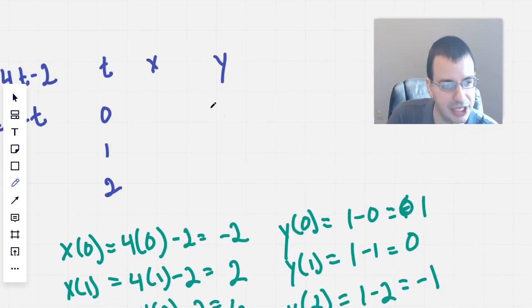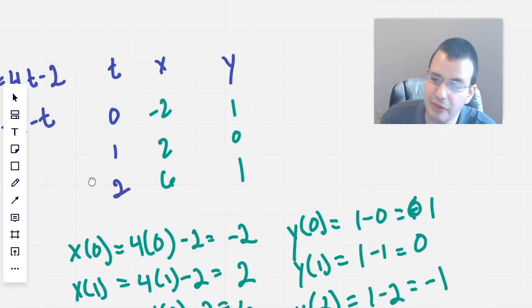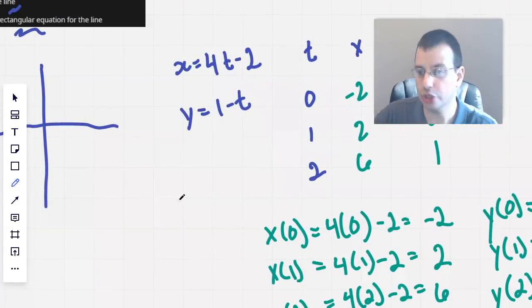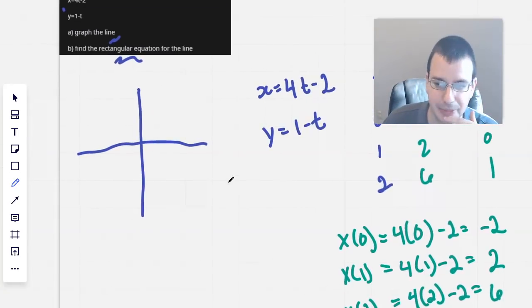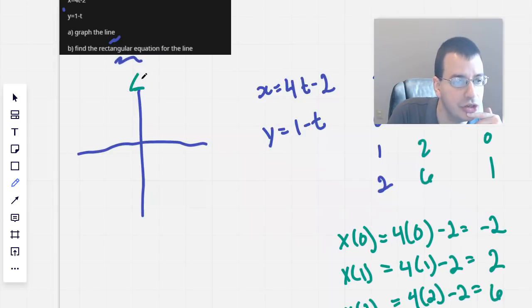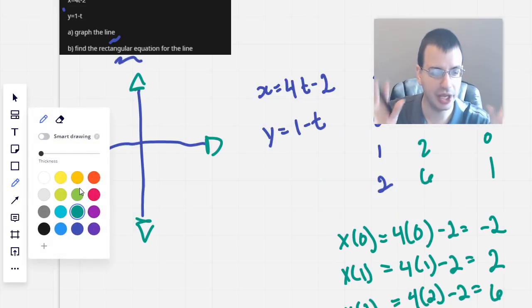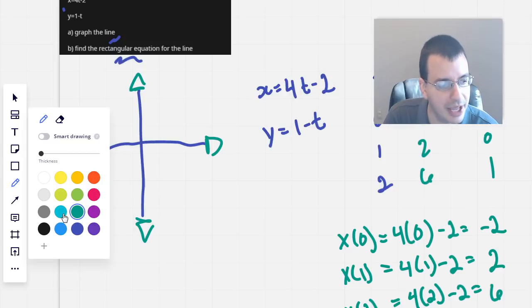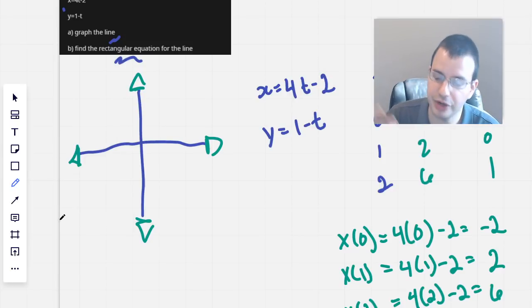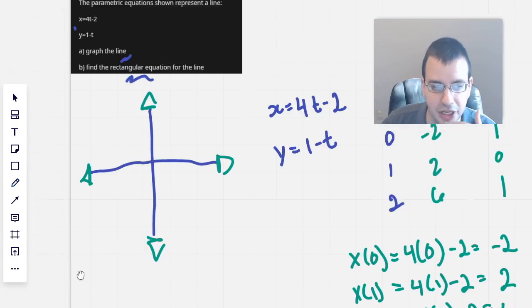I'm going to put these up into our table here. So we have negative 2, 2, 6 for x and 1, 0, negative 1 for y. If you have a more complicated graph, you could do more of them. This would be the guess and check method, or solved by inspection. This is generally the way, if someone's like, graph this parametric equation. The first thought is, well, I'll put it in my calculator, but if I don't have one available, this is how I would do it manually.